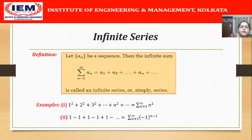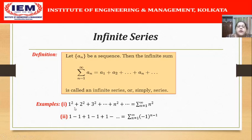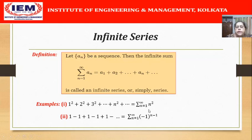Let us see some examples. The first example is 1² + 2² + 3² + dots + n² + dots, where the nth term is n², so we can write this as summation n² from n=1 to infinity. The second example is 1 - 1 + 1 - 1 + 1 and so on, which in summation notation is summation from n=1 to infinity of (-1)^(n-1). You can easily verify this by putting values of n as 1, 2, 3 and so on.